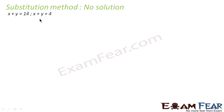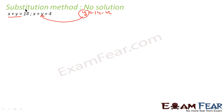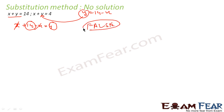Now let's take an example where we have no solution: x plus y equals 14 and x plus y equals 4. We write y equal to 14 minus x from the first equation, then substitute into the second equation. This becomes 14 minus x plus x equals 4, the x's cancel, giving 14 equals 4, which is a false statement. Since this is a false statement, we conclude there is no solution.